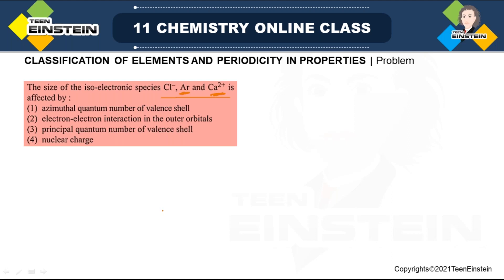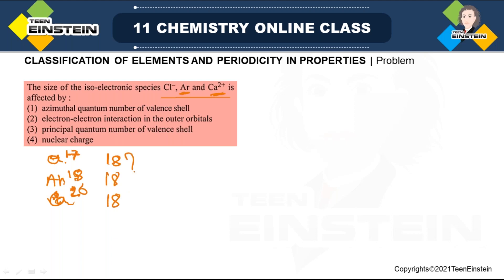First we will see how they are isoelectronic. Chlorine, neutral atom, has atomic number 17, so when carrying minus one charge the total number of electrons is 18. Argon has atomic number 18 and is neutral here. Calcium, when neutral, has atomic number 20, so when it has lost two electrons it also has 18 electrons total. So all of these are 18-electron species — that is why they are isoelectronic.